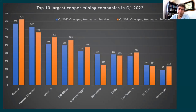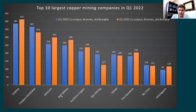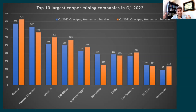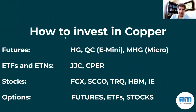Comparing Q1 2021 output to Q1 2022, the top producers are Codelco, Freeport-McMoRan, and Glencore, followed by BHP, Southern Copper (Peru), Zinc Minings, KGHM, First Quantum, Rio Tinto, and Antofagasta. Not all of these companies are purely copper miners — they also do coal, gold, and silver — but they are the major copper producers, and you can see the production figures for each company.